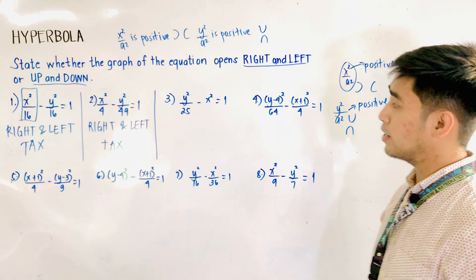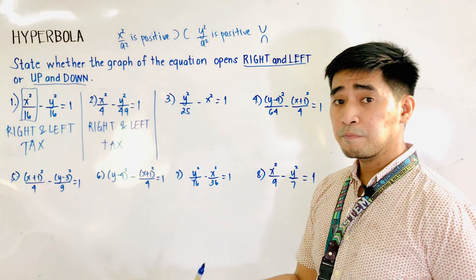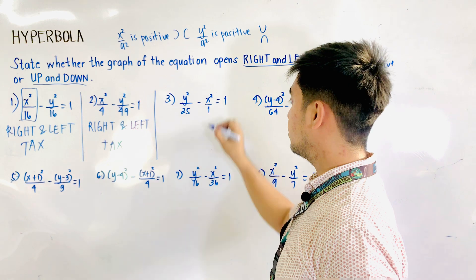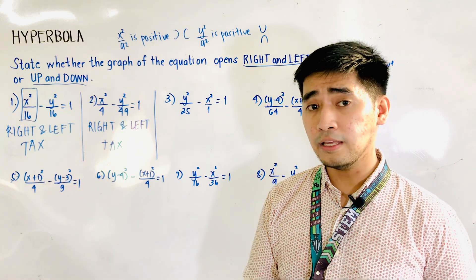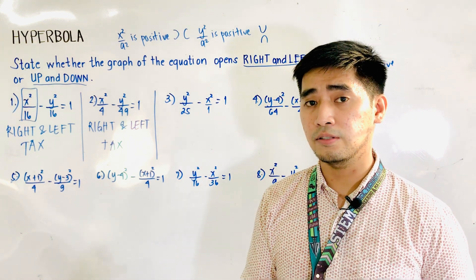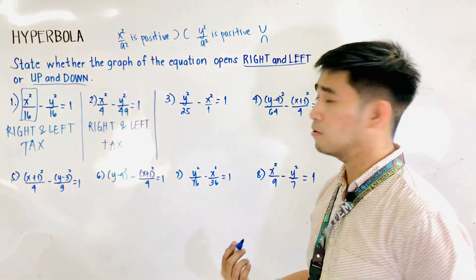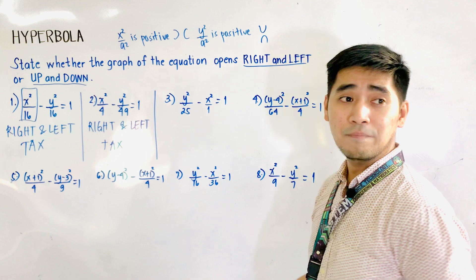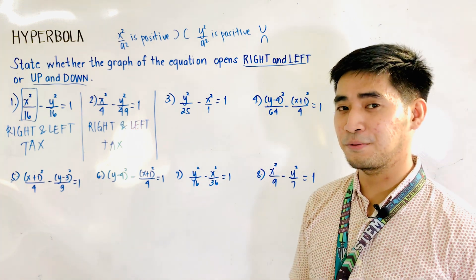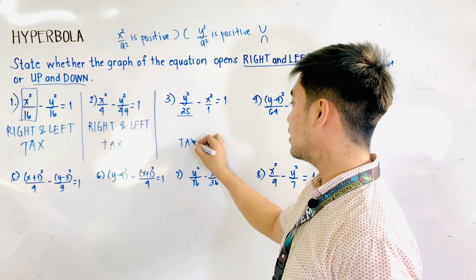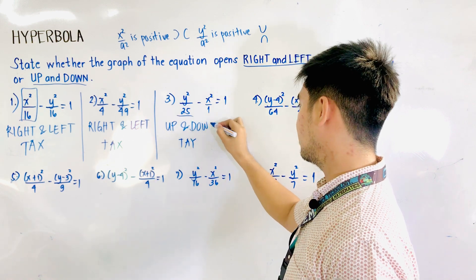For the third example, we have y squared over 25 minus x squared is equal to 1. Always remember that if a variable lacks a denominator, the denominator will always be equal to 1 — just like fractions, we divide by 1. So this becomes x squared over 1. Analyze which variable is positive — that is y squared over 25. We could now say this is TIE, transverse axis y. And when we have TIE, it opens up and down.